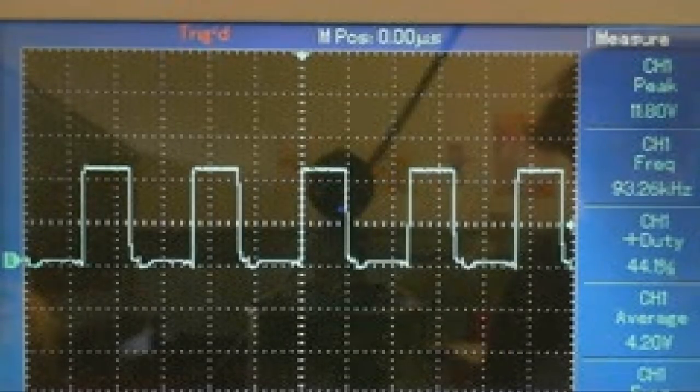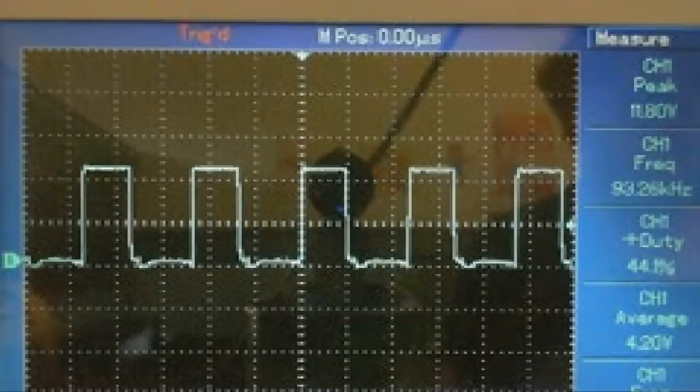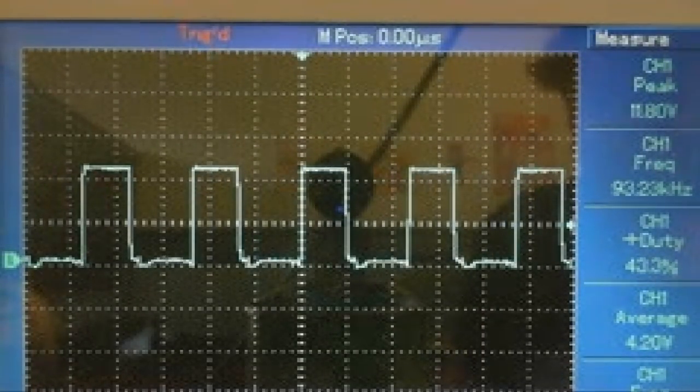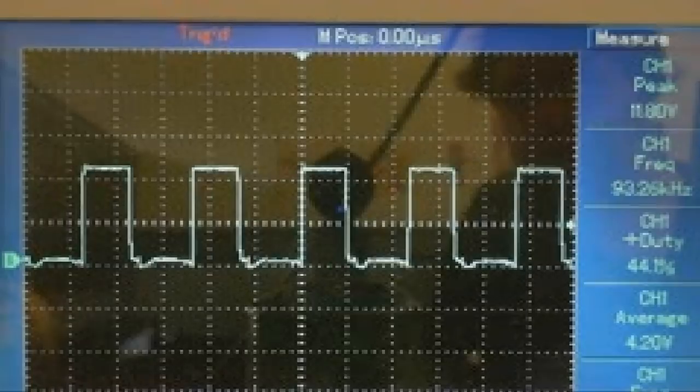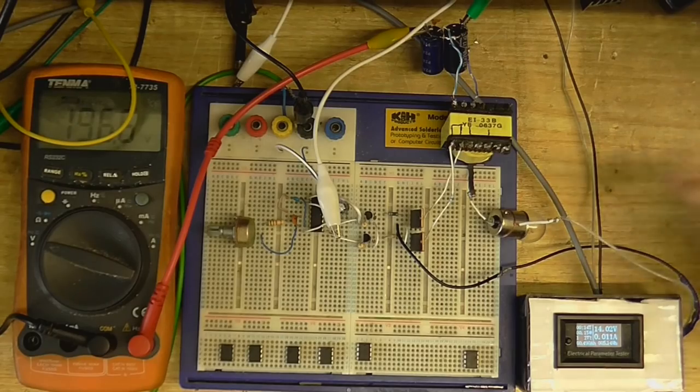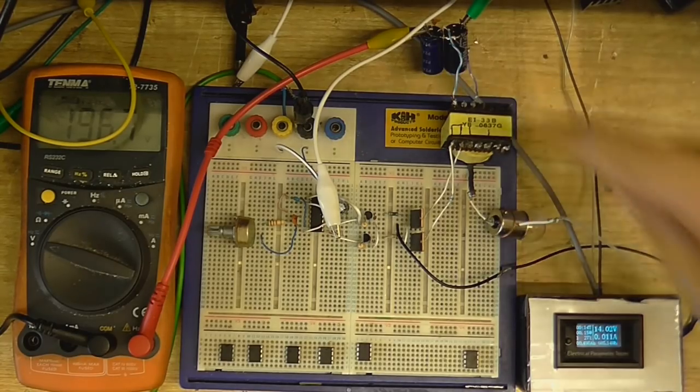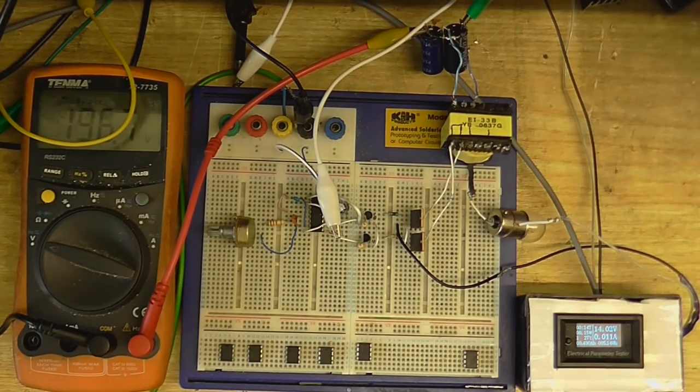Although the voltage seems to have gone down a little bit, better be safe than sorry. Well, according to my scope, the frequency is 93 kilohertz. So I'm going to say this transformer was built for around 100 kilohertz operation. But I think, right now, we should connect a tube up to this, and see how well it performs.